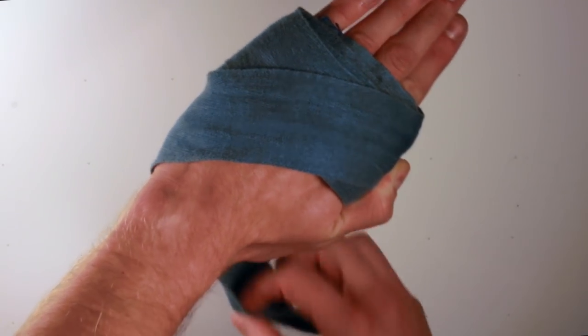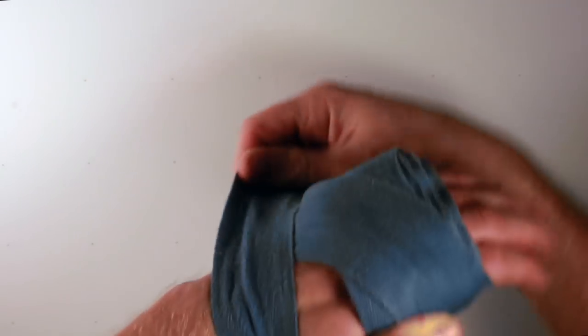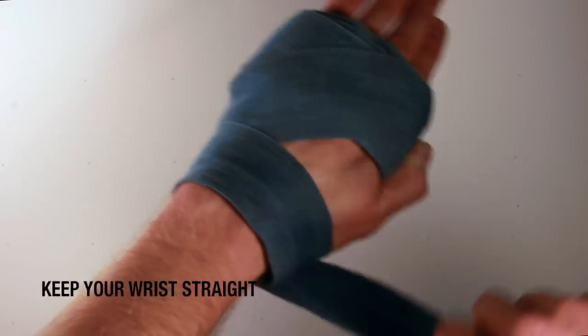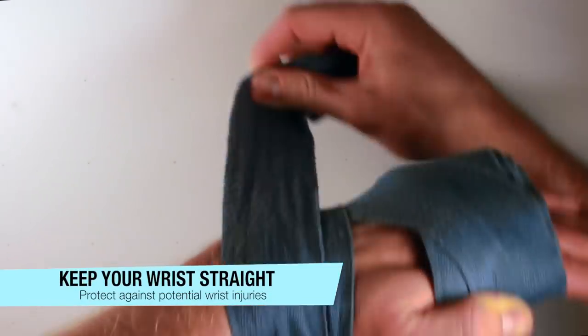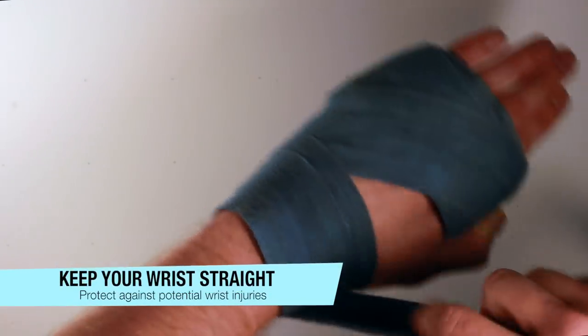From here, I go around three times. This is where we're going to start to protect the wrist a little bit. Now make sure that your wrist is straight as you're doing this. You don't want to force your wrist to be in a bent position. So we go around three times.